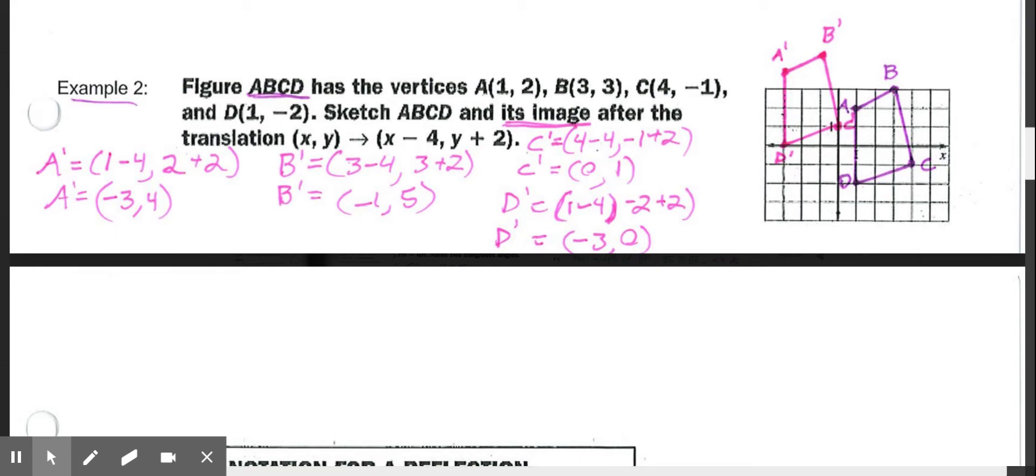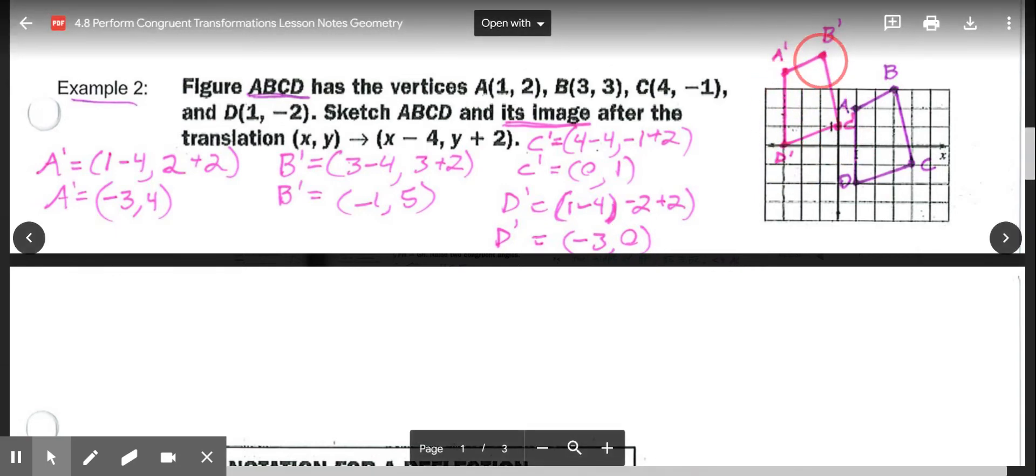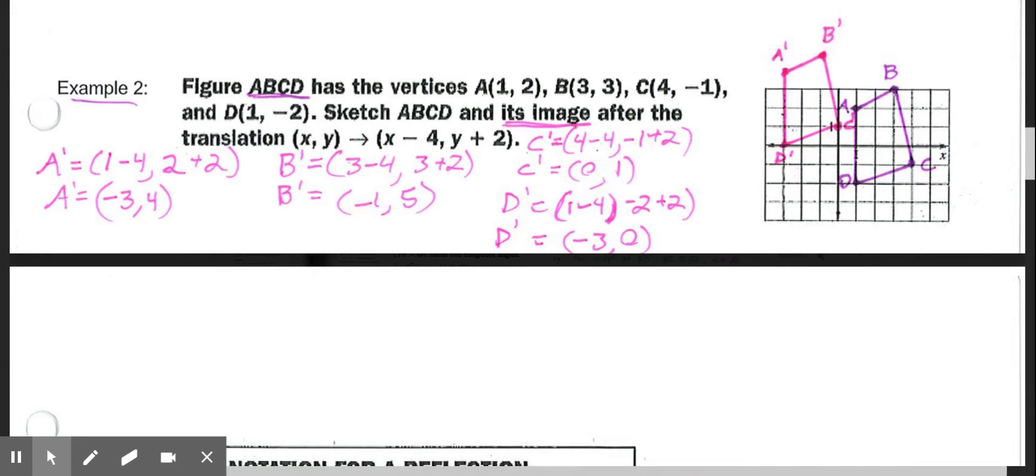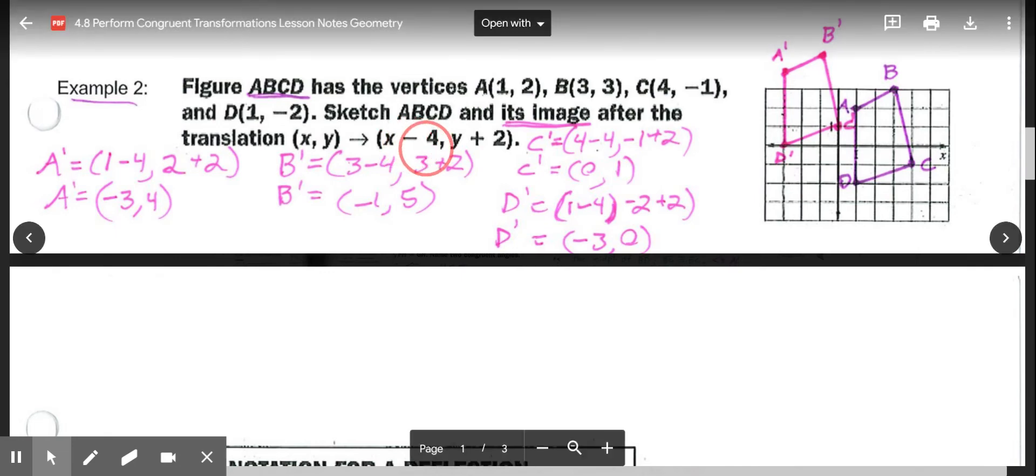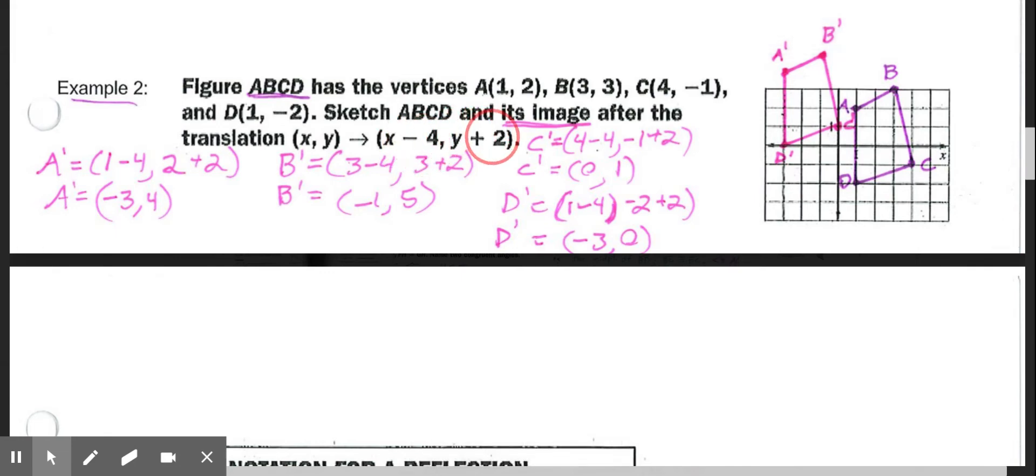So then our translation image, we're going to sketch that in here. So it went left 4 units and 2 units up. Left 4, 2 up.